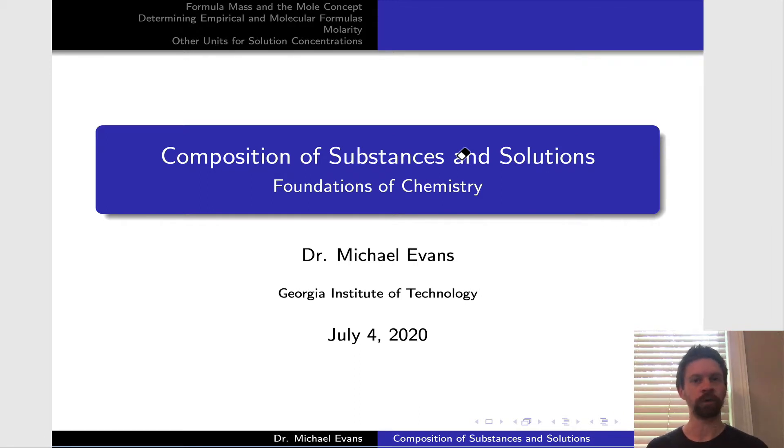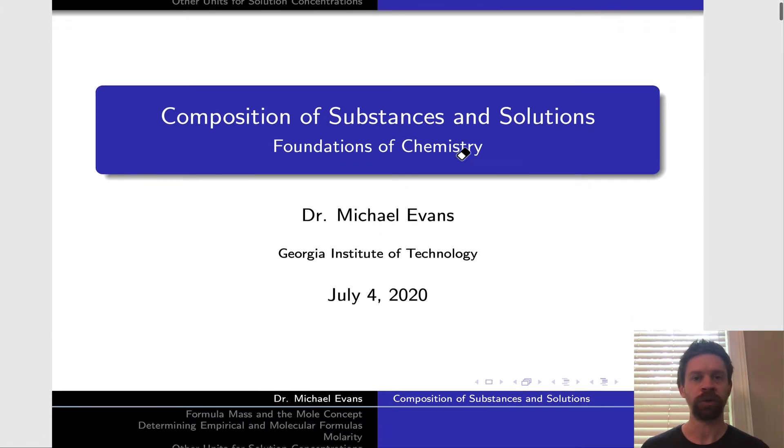In the video series following this one, we'll zero in on planning a chemical reaction process by thinking about how much of our reactants we need to add to get a particular amount of product. But to do that, we need foundational skills, concepts, and quantities to use as building blocks for that process, and we're going to elucidate those here.